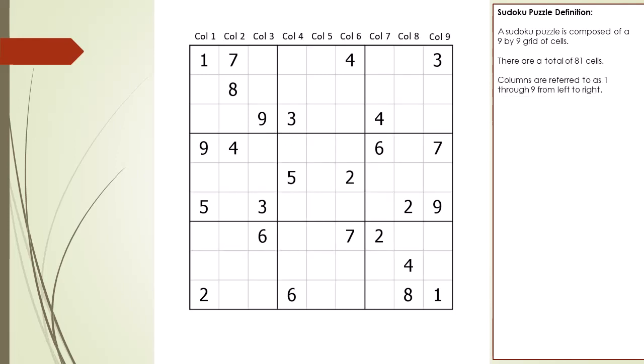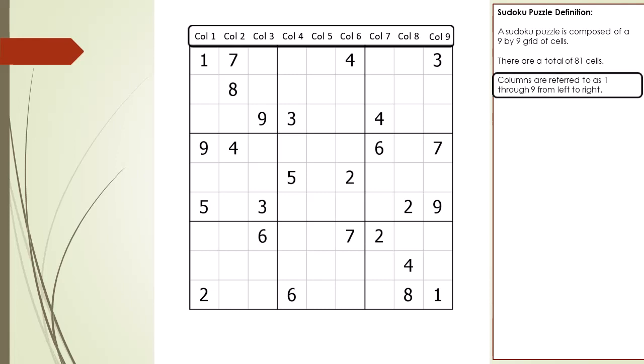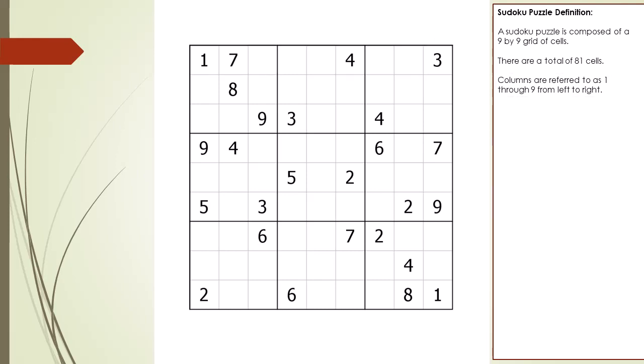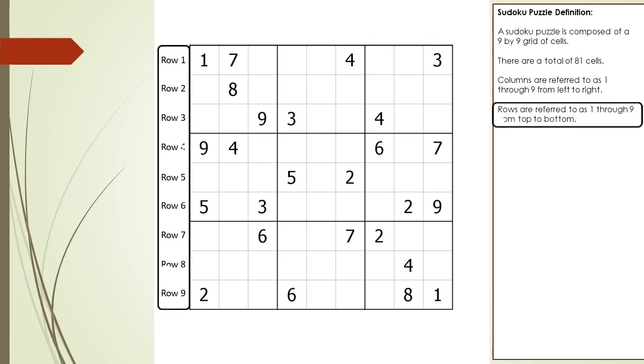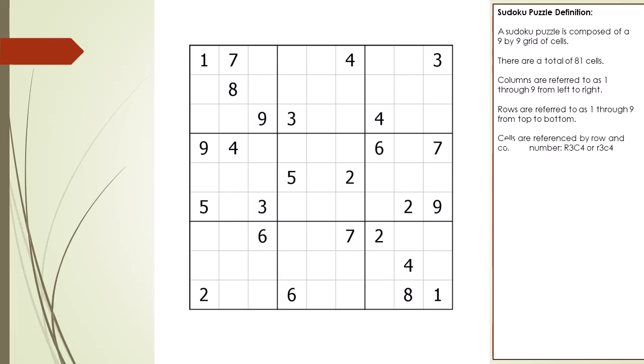The columns are referenced as columns 1 through 9 from left to right. The rows are referenced as rows 1 through row 9 from top to bottom. Cells are referenced by row then column.